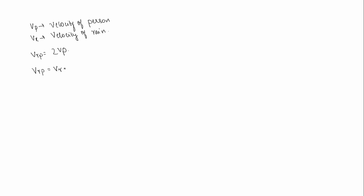We know velocity of rain with respect to person is velocity of rain minus velocity of person. We can plot this now. In the question, it is given that the person is walking forward — this is velocity of person. And rain is falling vertically downwards — so this is velocity of rain.